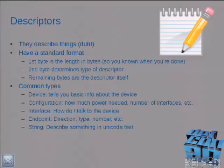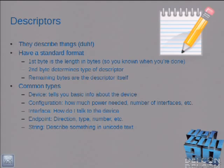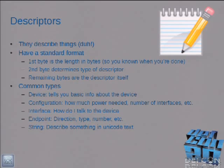So what's a descriptor? Descriptors describe things. They all have a standard format. The first byte says how big this descriptor is — when the hardware on the other side should stop reading. The second byte is what kind of descriptor it is. A device descriptor is gotten first and tells you basic stuff like how to talk to the device and power requirements. Configuration tells you how much power and how many interfaces. Interface further describes the device. Endpoint descriptors tell us about each endpoint. String descriptors give us strings in Unicode.